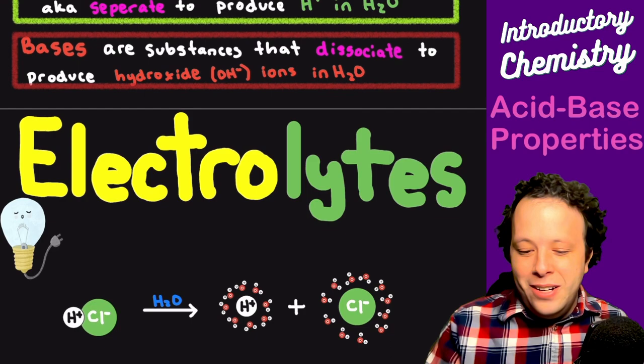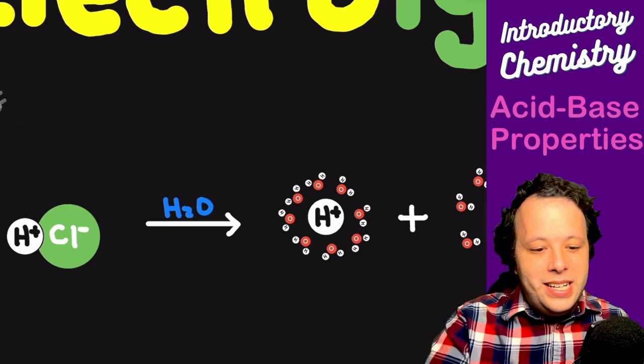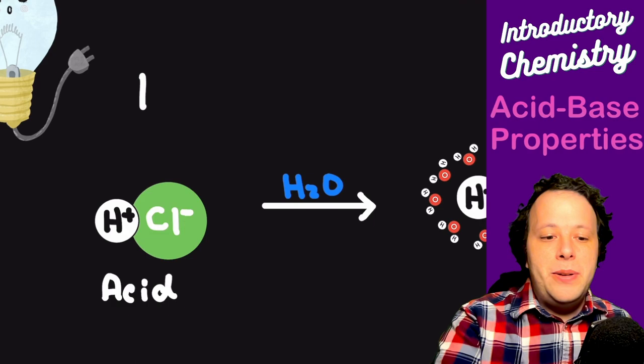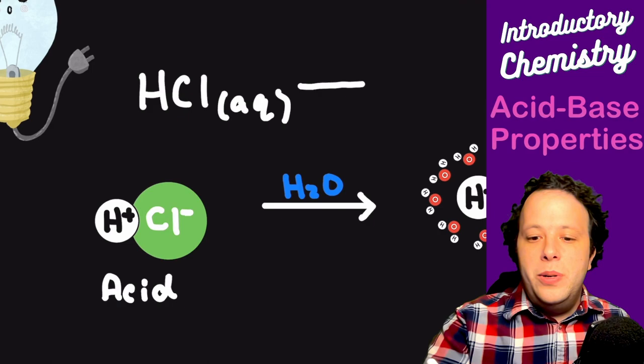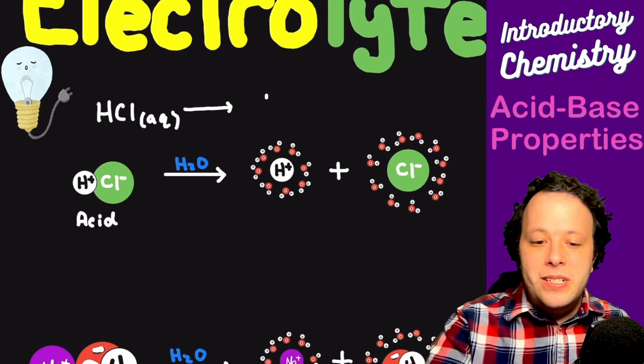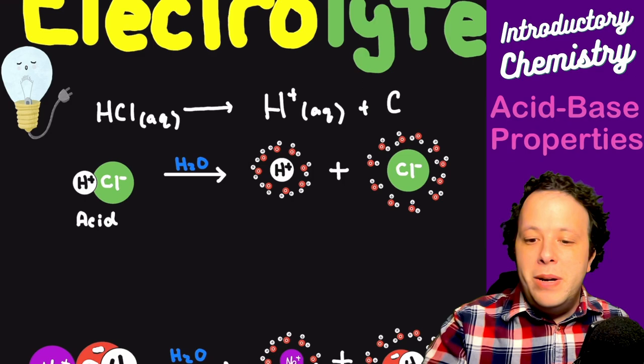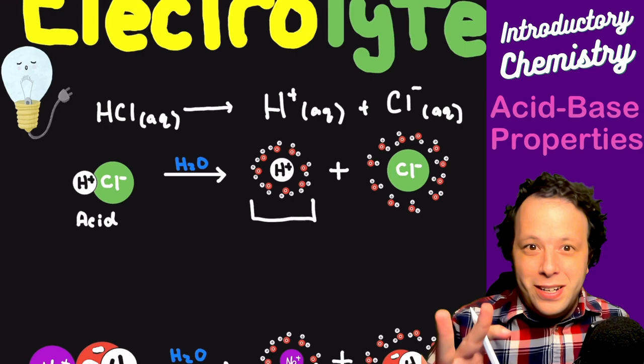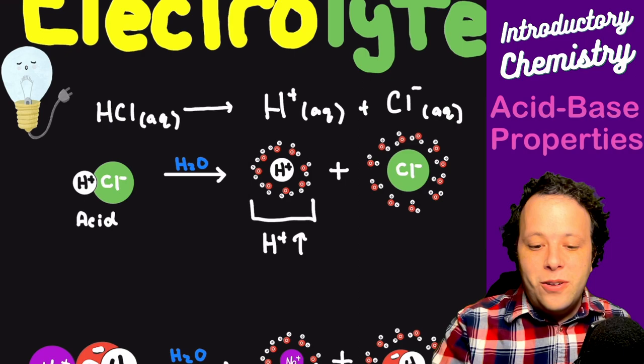When it comes to electrolytes, we take something like HCl, which is an acid, and throw it into water — it will dissociate. We write that as HCl (aqueous) undergoing a dissociation reaction, breaking apart in water to produce H+ and Cl-. Because it generated H+, this tells you it made H+ and increased it, so this is an acid based on the Arrhenius acid definition.